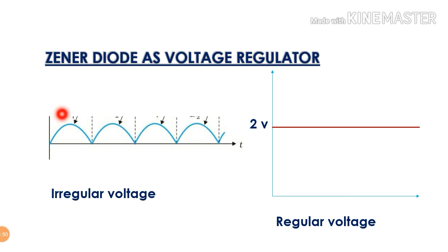If we use the filter circuit, we use a constant voltage. This is irregular shape — it is irregular AC voltage. The voltage is AC voltage, this is irregular voltage. We use a 2V DC — this is regular voltage.